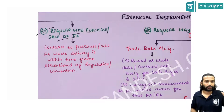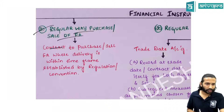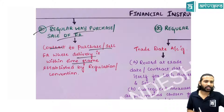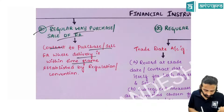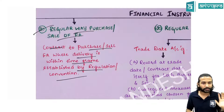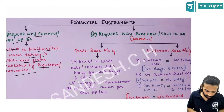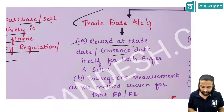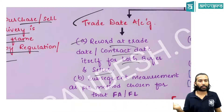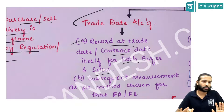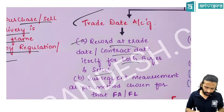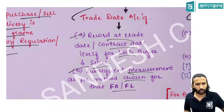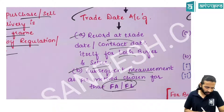Regular way purchase and sale: this is a contract to purchase or sell a financial asset requiring delivery within a stipulated time regulated by a particular authority. For regular way purchases, you can use either trade date accounting or settlement date accounting. Under trade date accounting, the financial asset or liability is recognized on the trade date itself, by both buyer and seller.